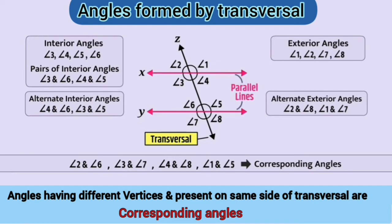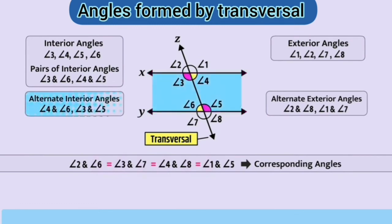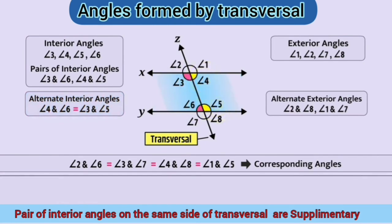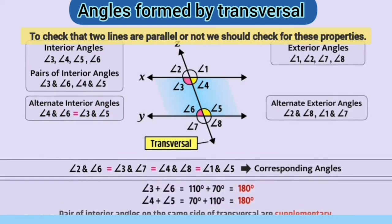When two parallel lines are intersected by a transversal, the angles formed in each pair of corresponding angles are congruent. Alternate angles are congruent and interior angles are supplementary. Therefore, to check whether two lines are parallel or not, we should check for these properties.